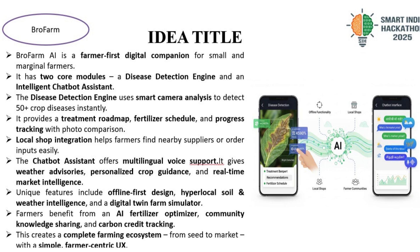The second slide represents an AI designed as a farmer's first digital companion to support small and marginal farmers. The solution revolves around two main modules: a disease detection engine and an intelligent chatbot assistant. The disease detection engine leverages smart camera analysis to instantly identify over 50 crop diseases, helping farmers take timely action. Once a disease is detected, the system provides a treatment roadmap, fertilizer schedule, and progress tracking through photo comparisons. It also integrates with local shops, enabling farmers to locate suppliers or order essentials with ease.